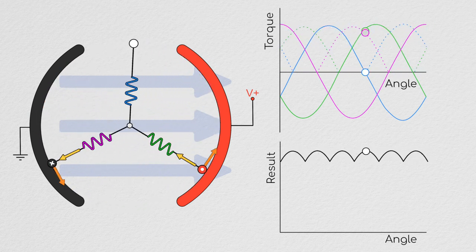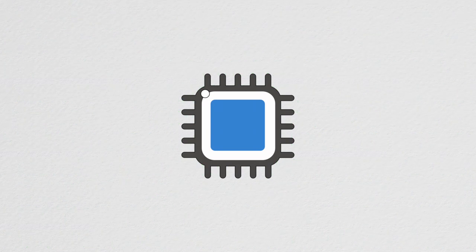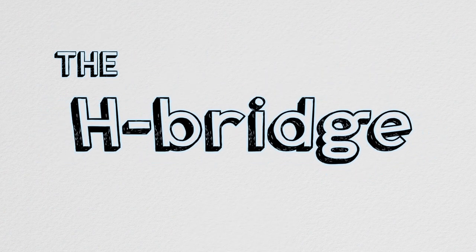Without brushes, this is no longer an option, and we have to handle commutation entirely electronically. And this brings us back to our old friend from episode 3, the H-Bridge.